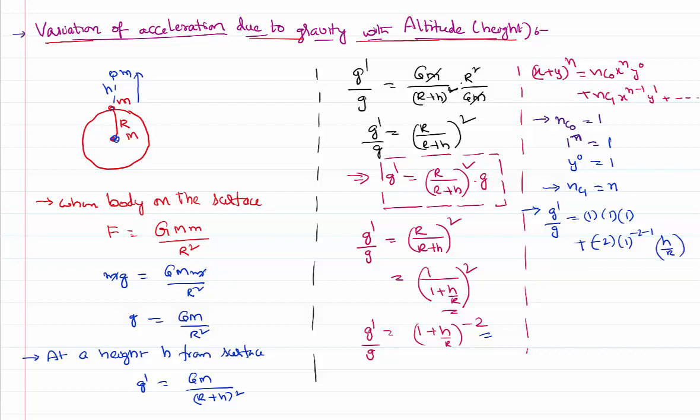I am not writing any further terms and ignoring them because as we go further, I will get h squared in the numerator and R squared in the denominator. As h value is very small, we are taking that condition. If the height is small, h squared becomes much smaller than R squared, and hence I am ignoring all the further terms.